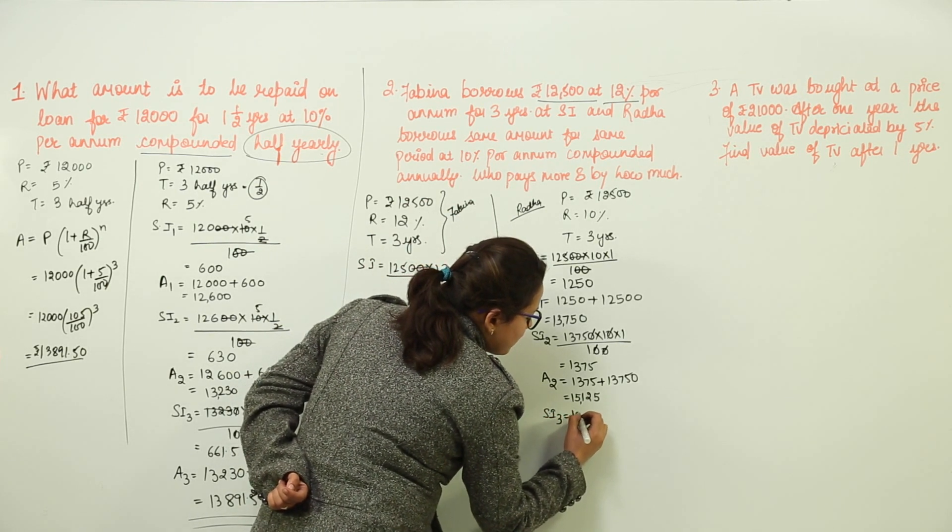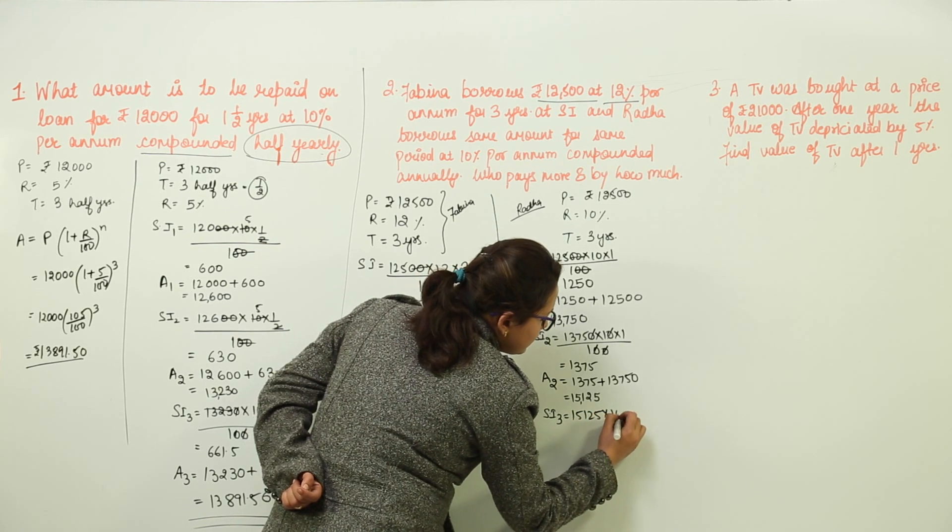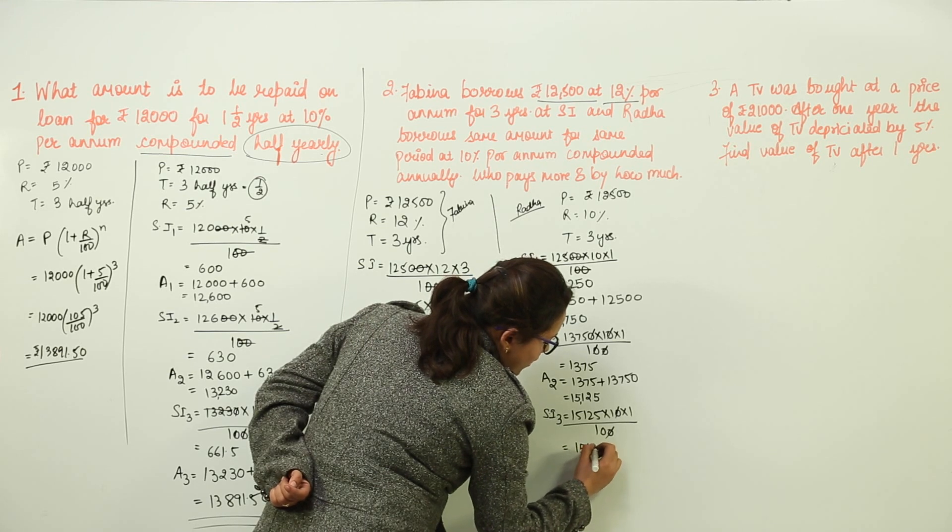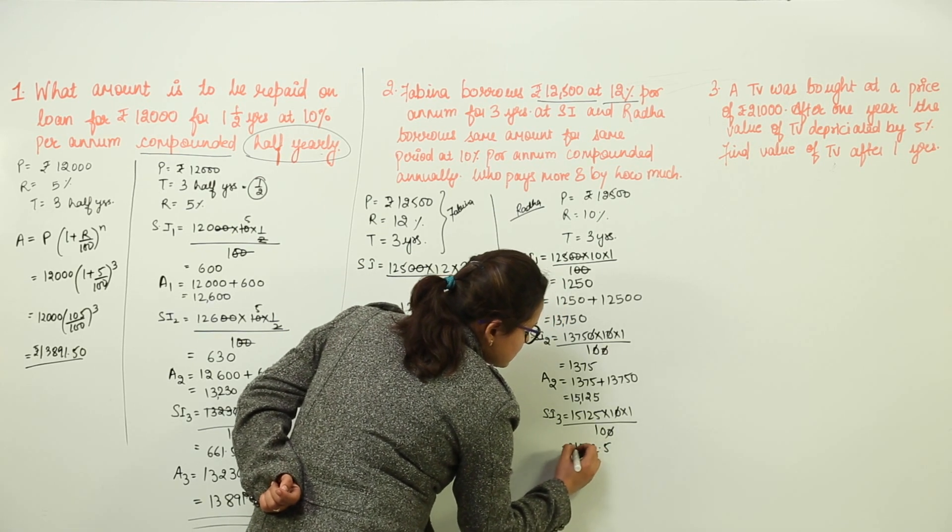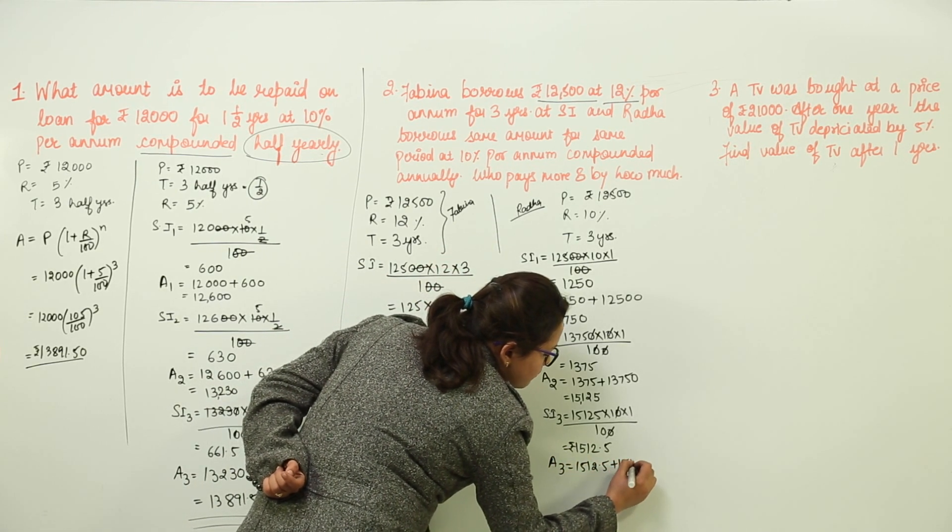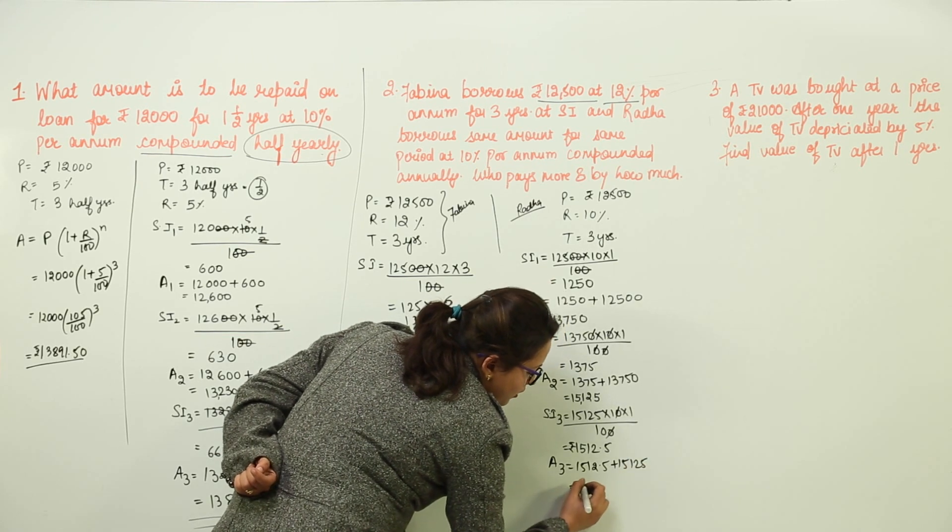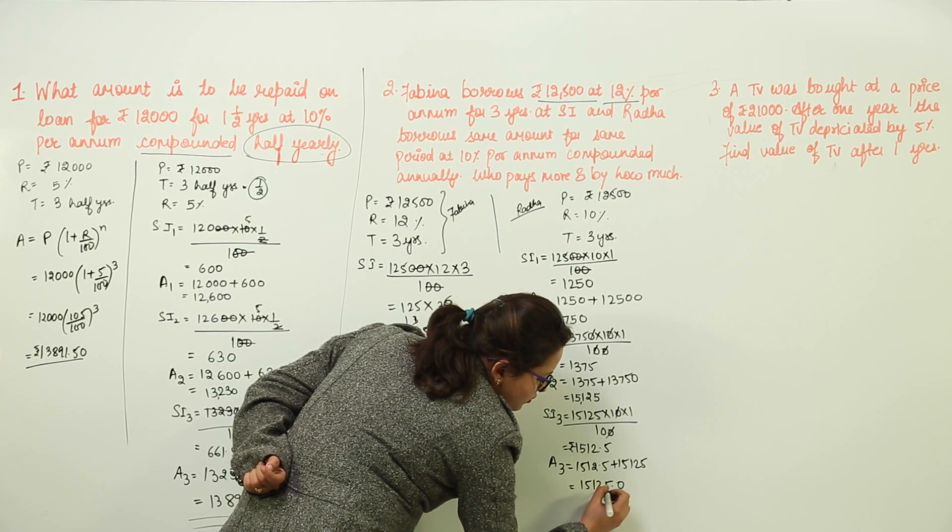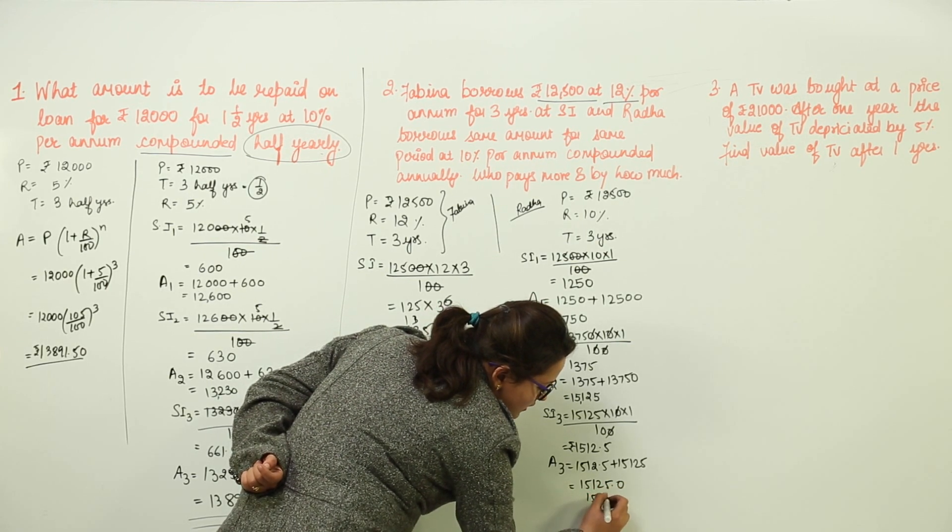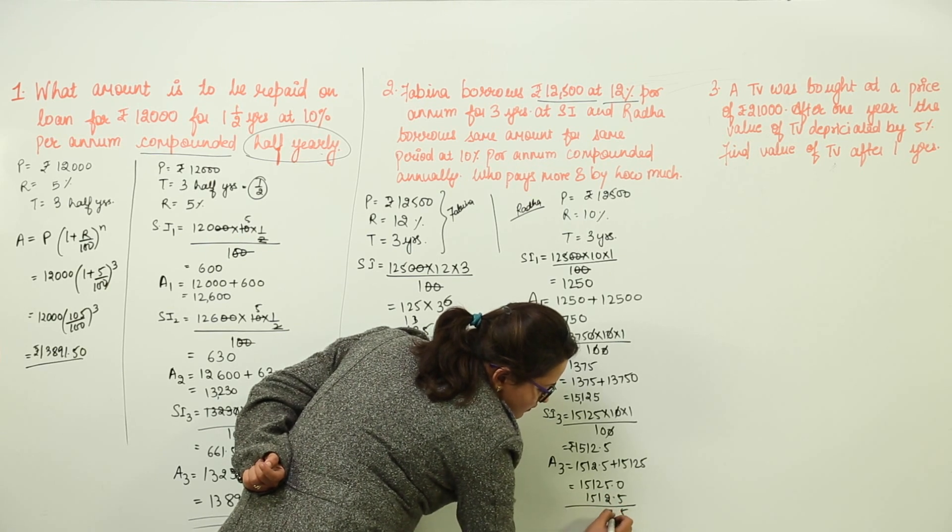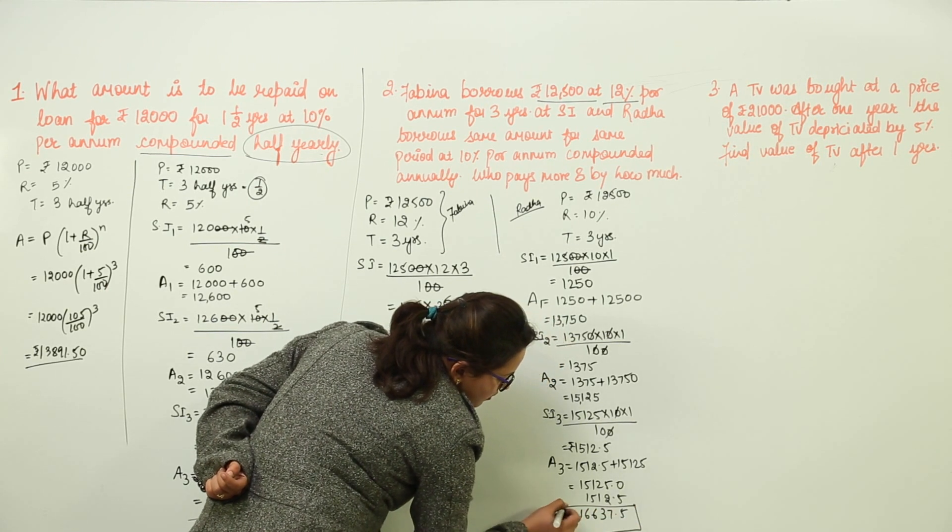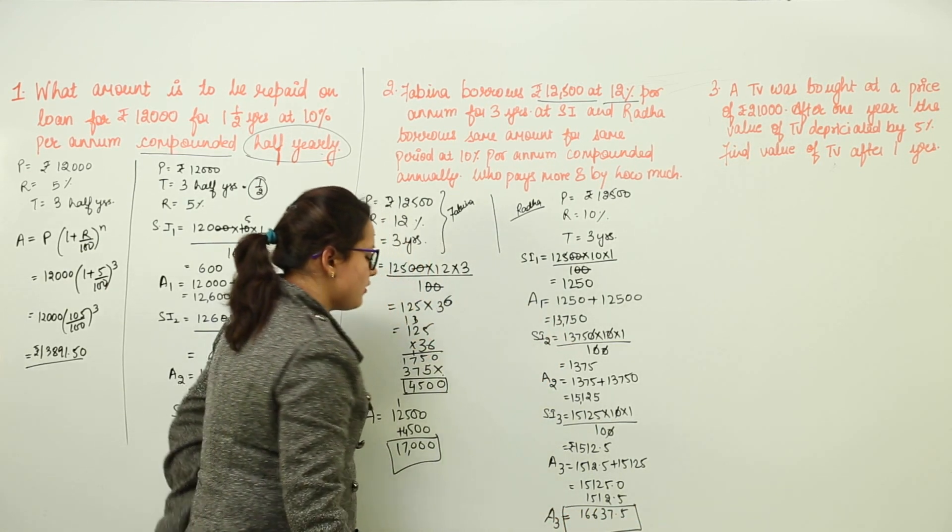Again, simple interest for the third year: 15,125 into 10 into 1 upon 100. We get 1,512.5 as the simple interest. For the amount, we would add this to the principal for the third year. On adding, we get 16,637.5. This is the amount that she is going to pay at the end of third year.